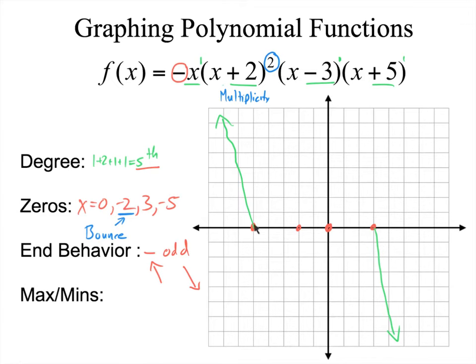If you went straight through, watch what happens. Do you see how I have an issue right here? That doesn't work because of the bounce at negative 2. That multiplicity means we're going to bounce right there.